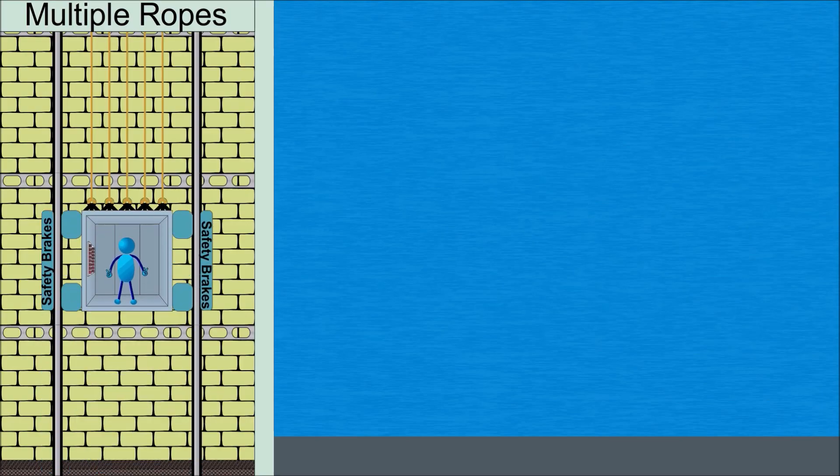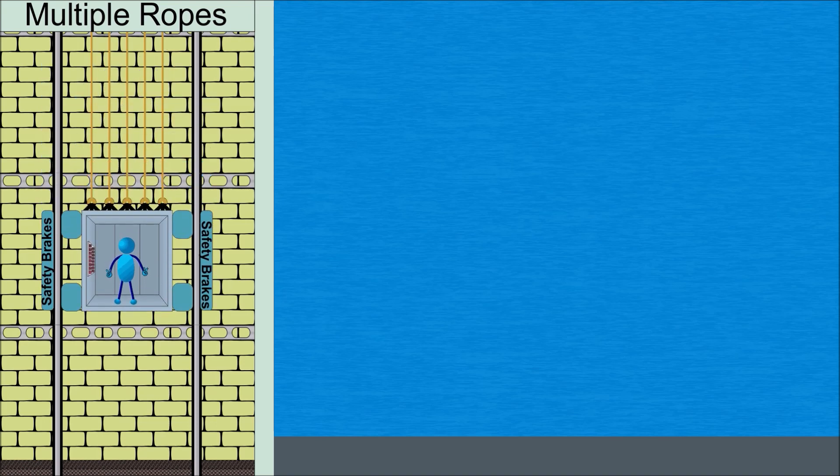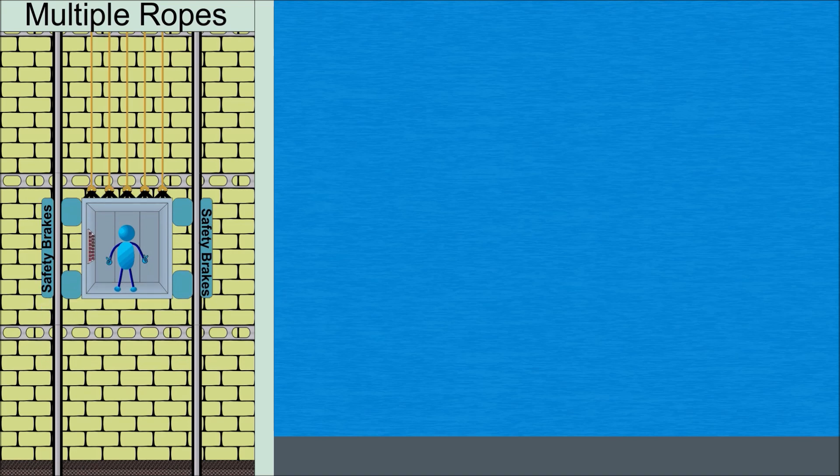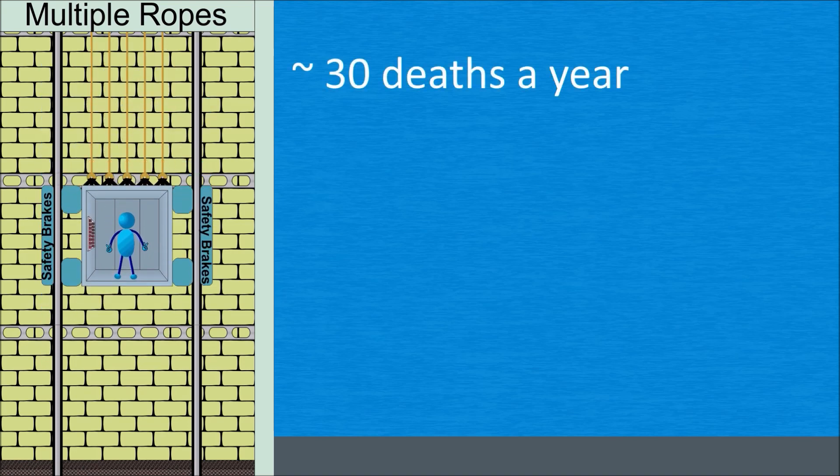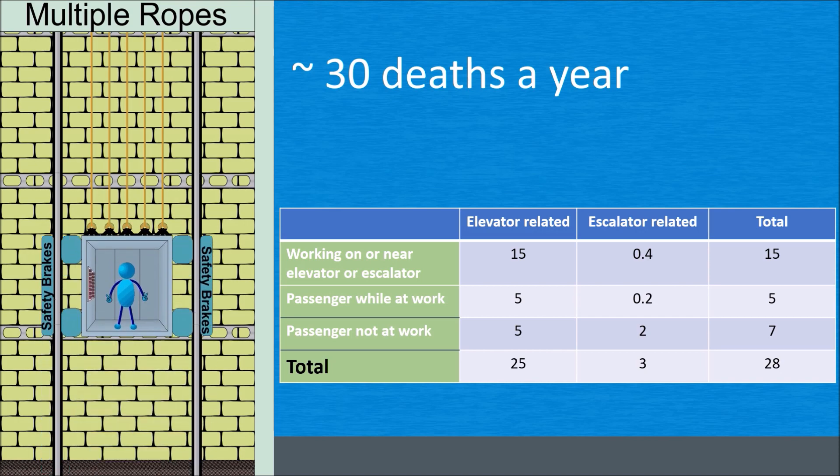Luckily for us, elevators are remarkably safe. They have multiple ropes and safety brakes, which makes accidents extremely rare. The number of deaths related to elevator accidents in the US is around 30 deaths a year, and most of them are deaths involving work in or near elevators.